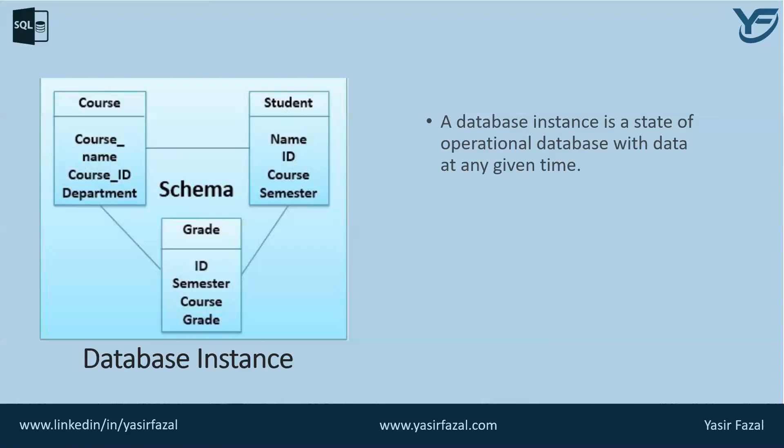On the other hand, the database instance does contain information and data. As we can see in the slide, when I talk about the schema, it means there are three tables — course, student, and grade — and there are columns that are defined in these tables.